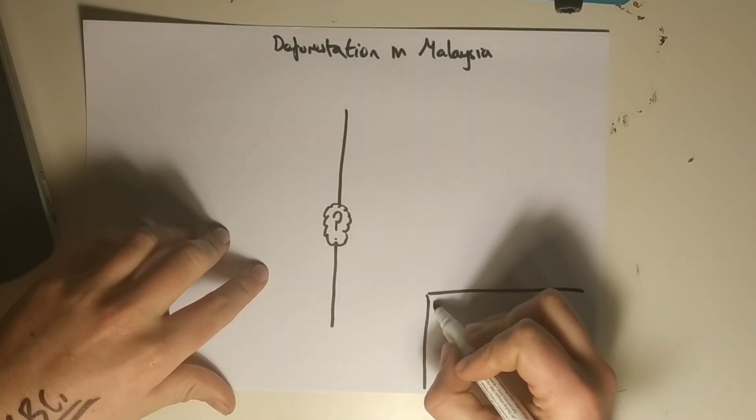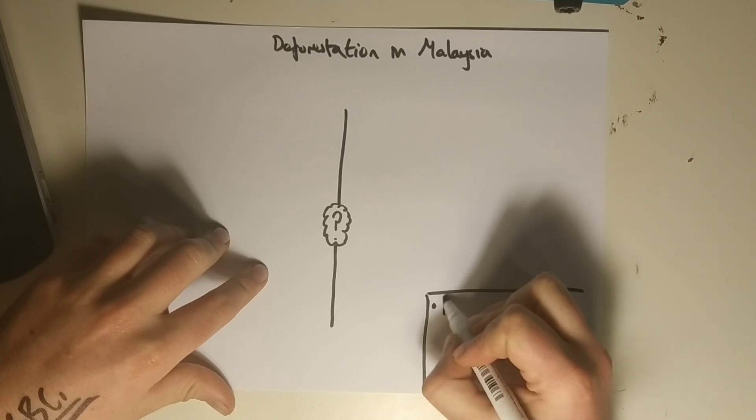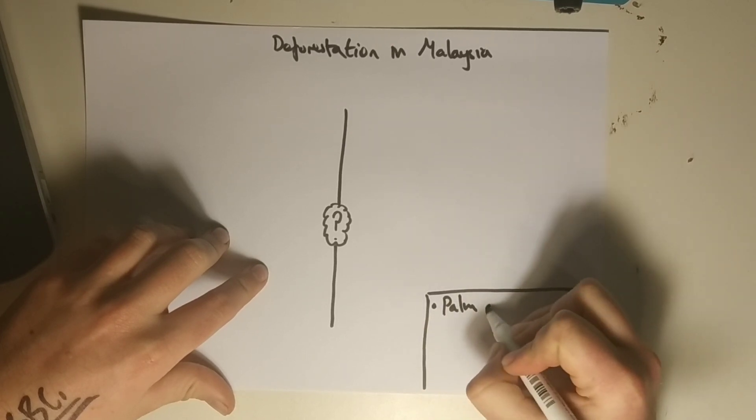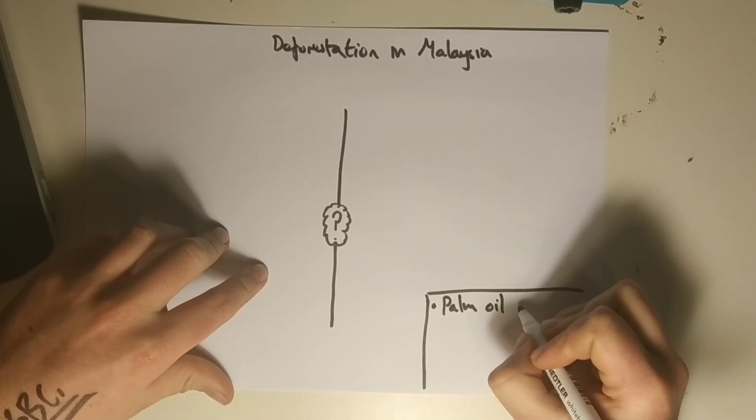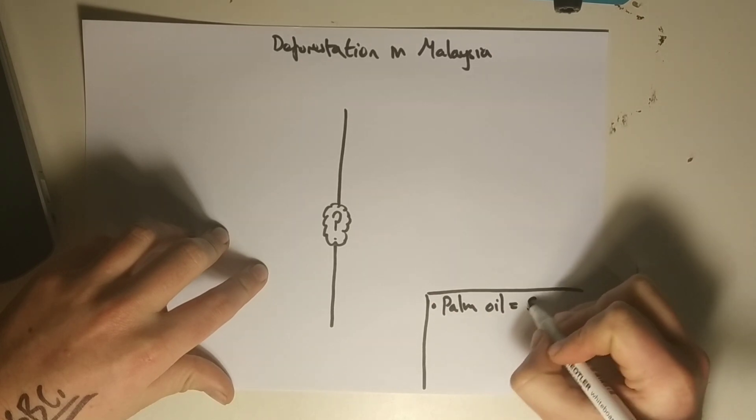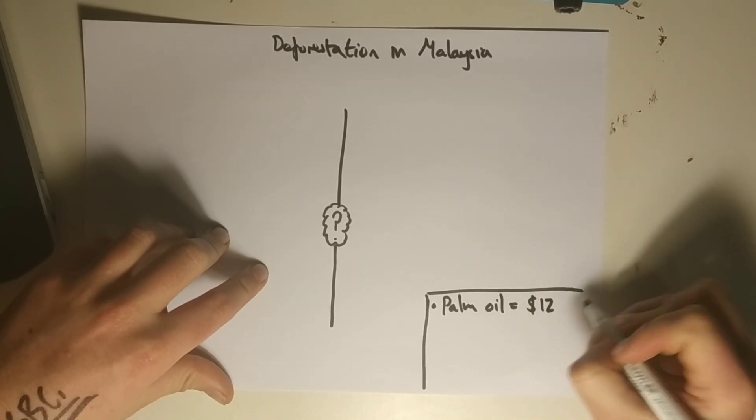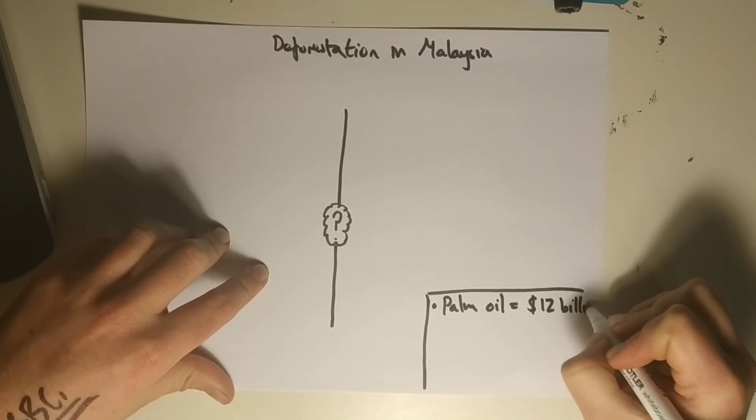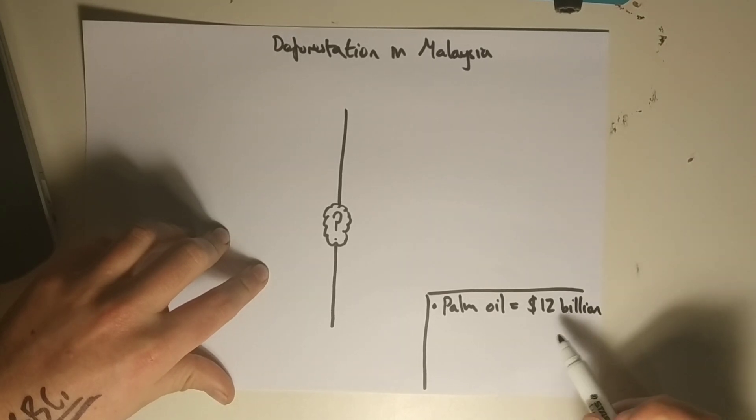So let's just remind ourselves that the palm oil industry in Malaysia alone is worth $12 billion. It's a huge proportion and we must remember this is one of the key reasons why it occurs.